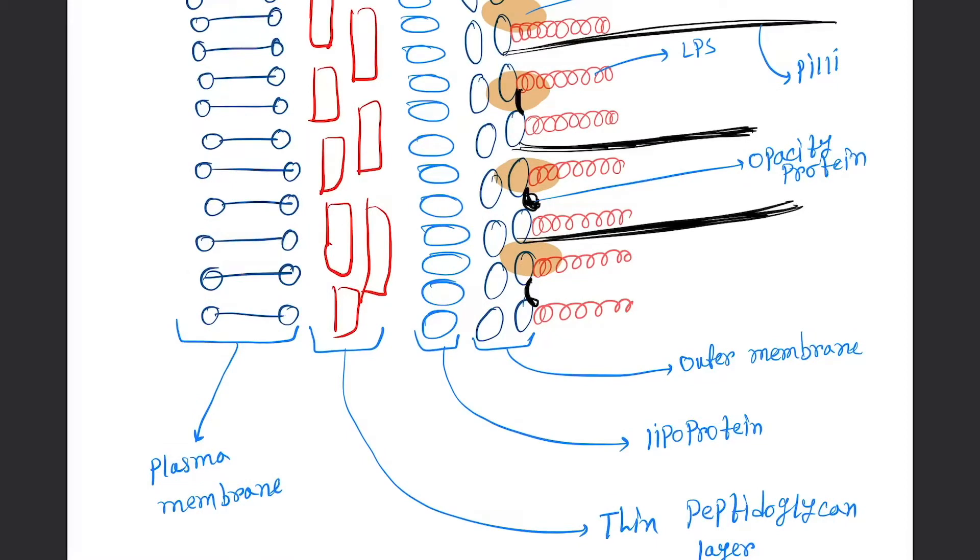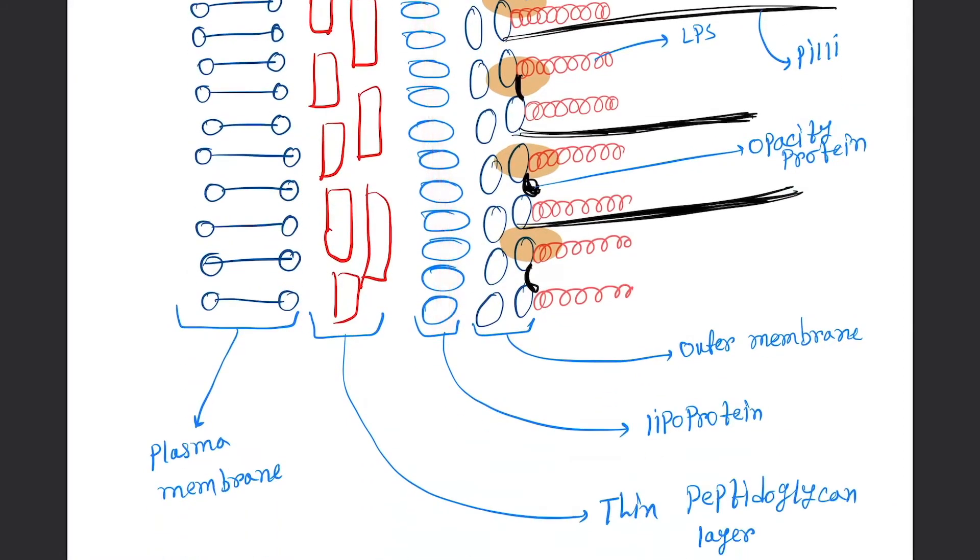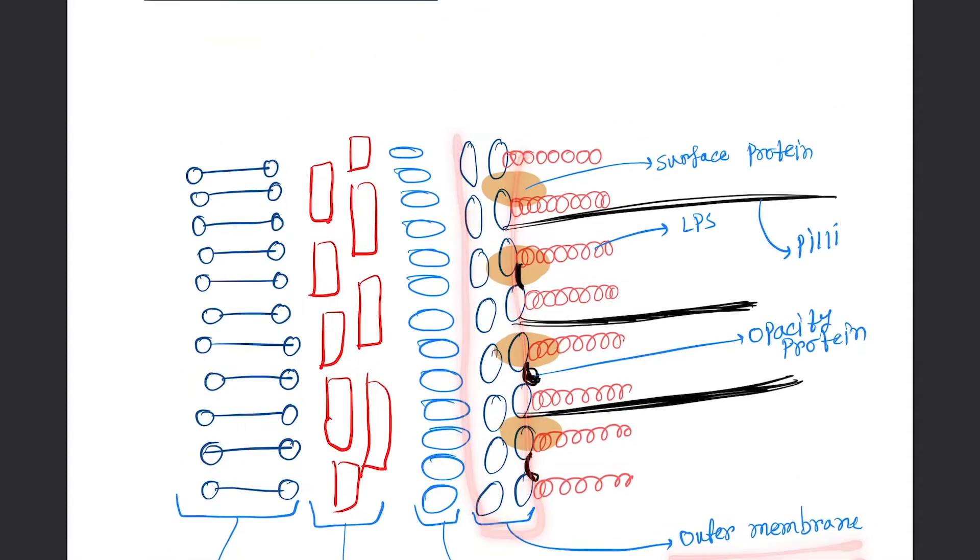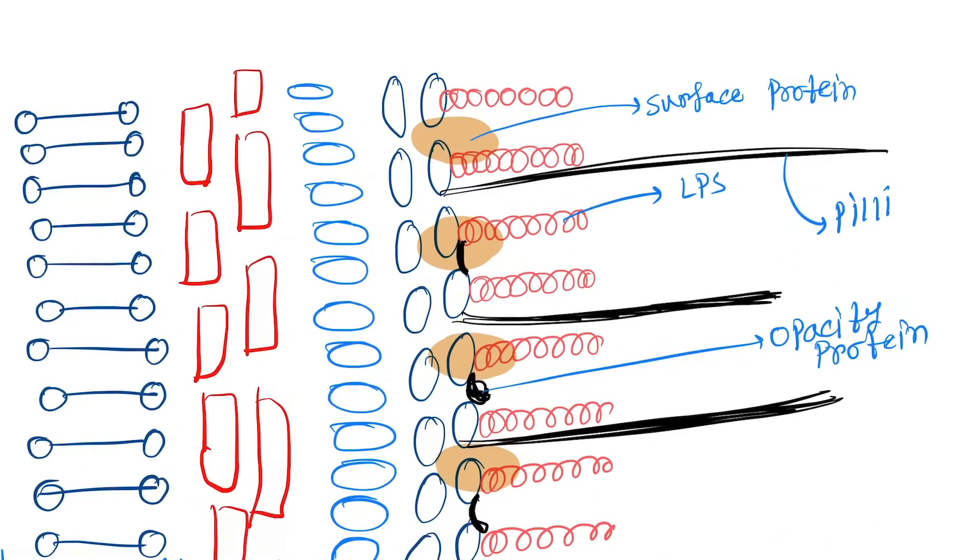Next is the lipoprotein layer, this is lipoprotein. Next is outer membrane, this is absent in gram-positive bacteria. To the outer membrane, lipopolysaccharide is attached, surface proteins are attached, and these are the pili.